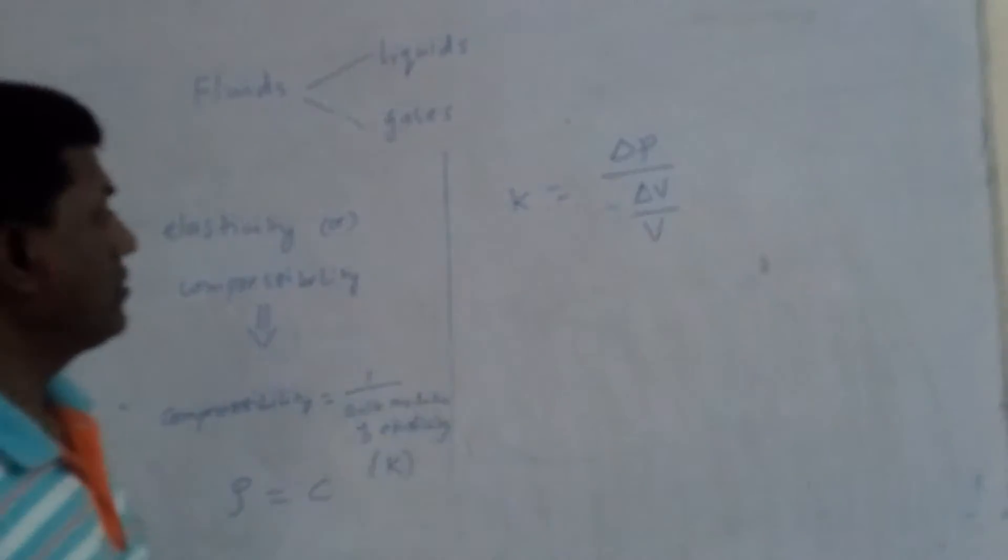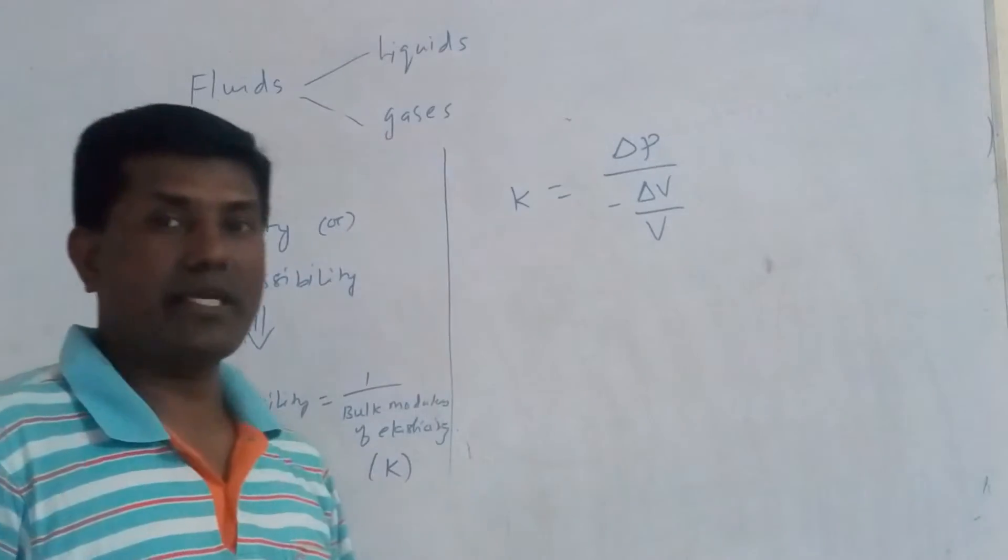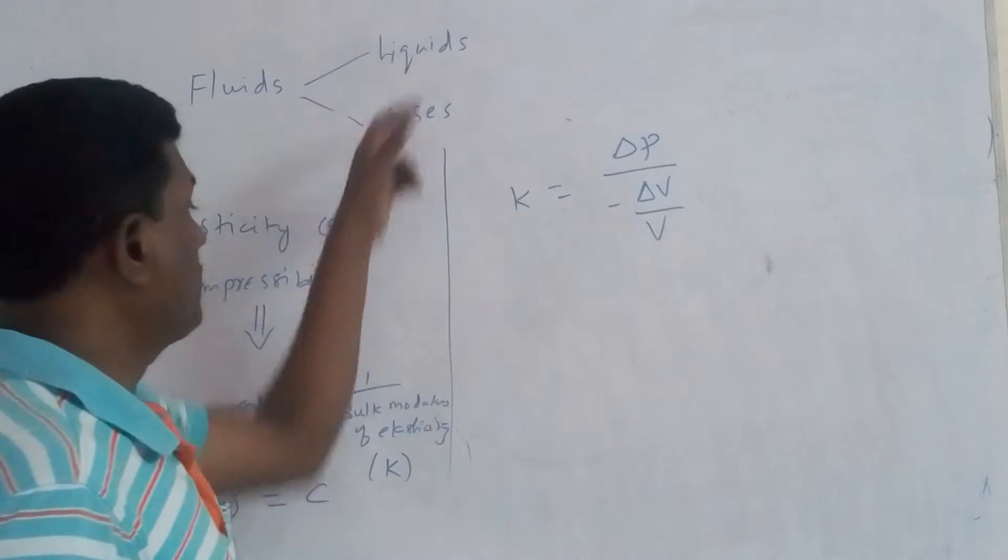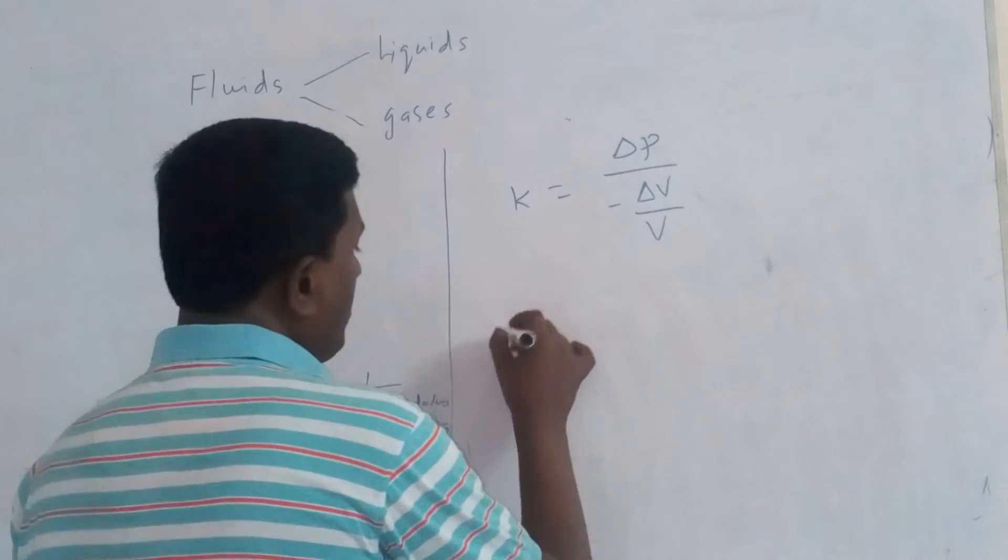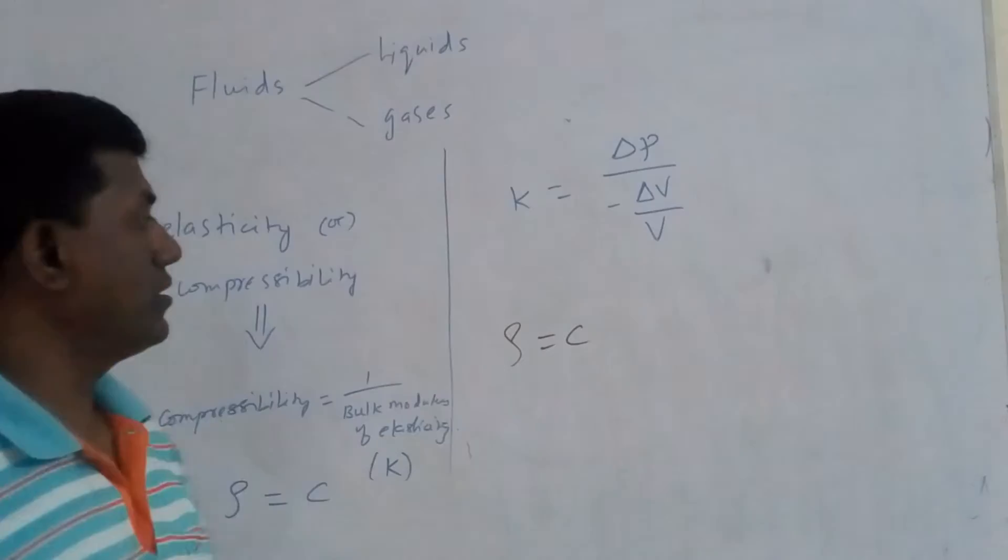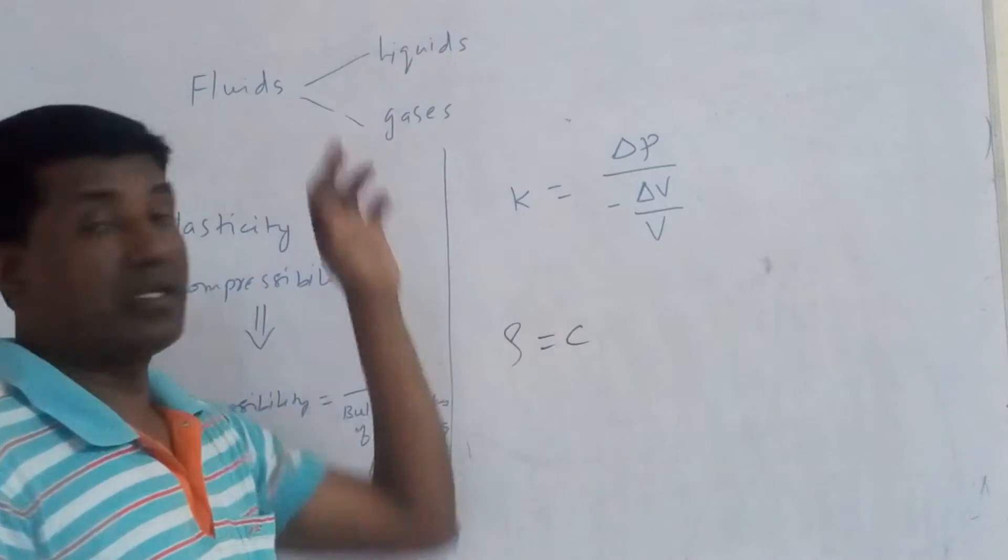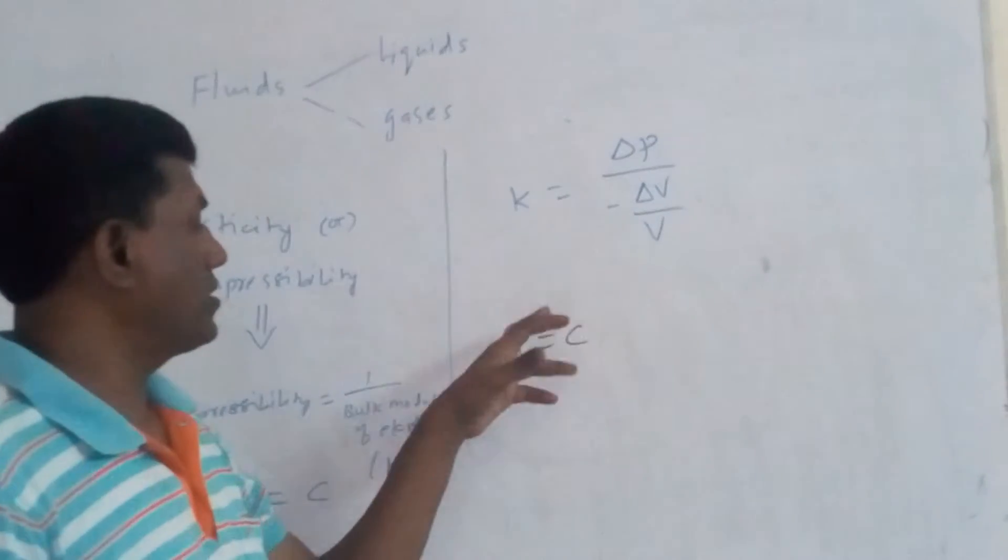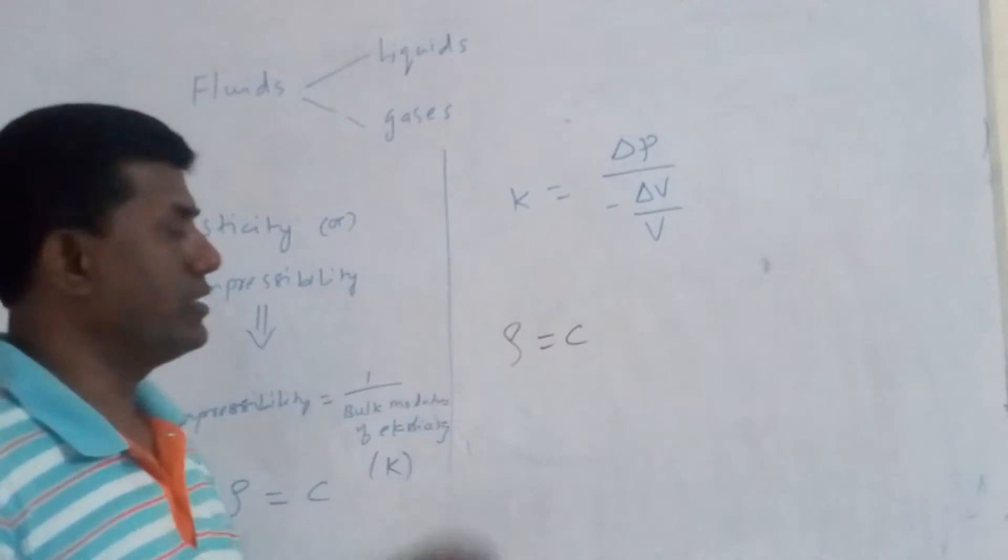So now this is the equation of state for the liquids. So we can simply write rho equal to C because of the sufficient approximation that the liquids are incompressible. So based on that assumption simply we can write the equation of state as density equal to constant.